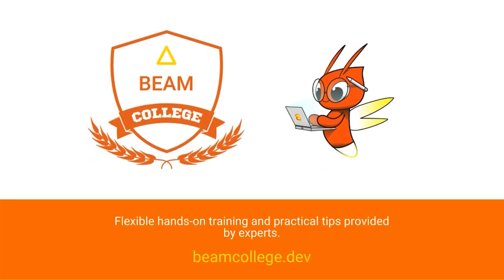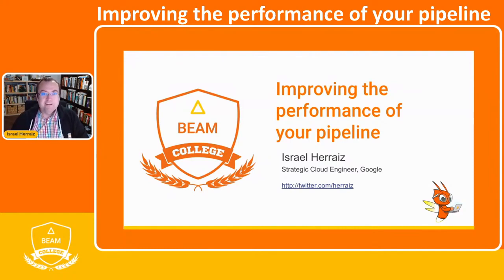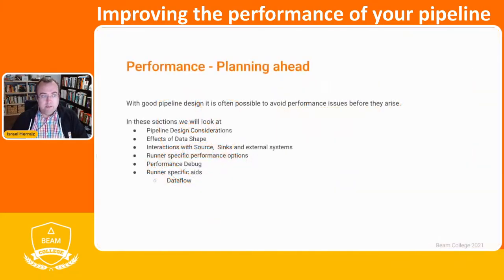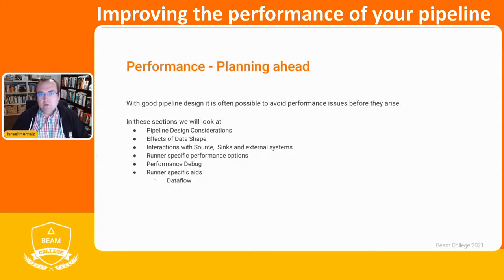So it's me again. Maybe you remember me from the talk about the Dataflow runner. Let's move on. So how can we improve the performance of our pipeline? I'm going to be talking about some generic advice, although some other advice is specific to Dataflow. I will try to warn when something is more specific to Dataflow.